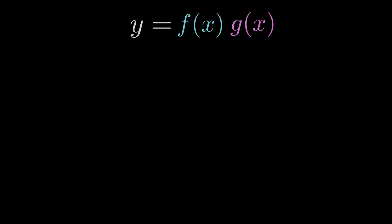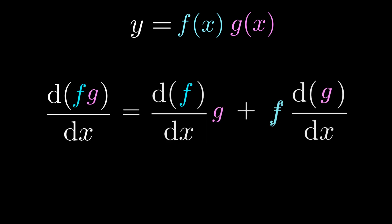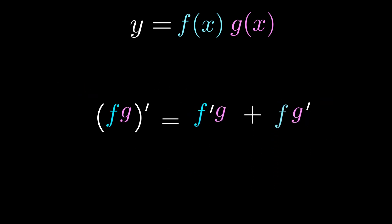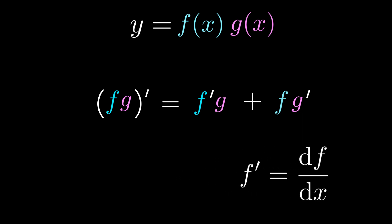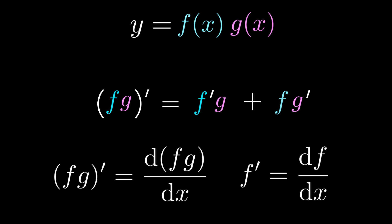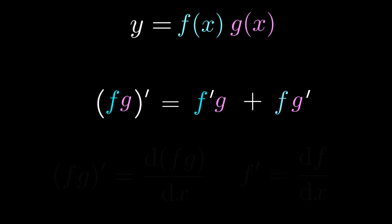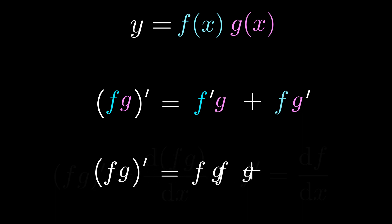Remember that if y = f(x)·g(x) then the product rule states dy/dx as shown. A better, more memorable way of writing it is to use Lagrange's notation: (fg)' = f'g + fg', where f' = df/dx and (fg)' is the derivative of f times g. This makes the product rule easy to remember: write fg twice with a plus in between and put a dash on each function.